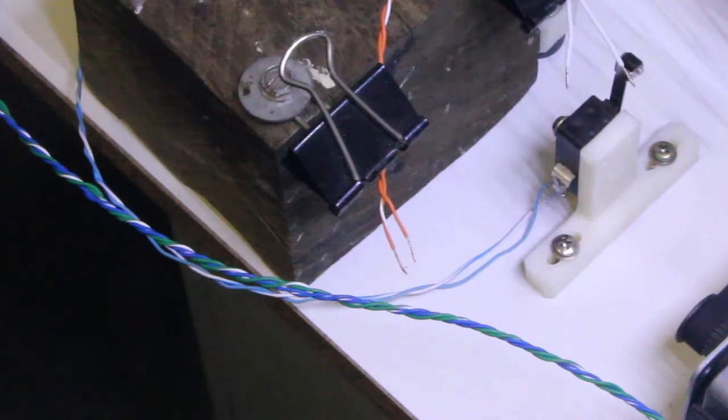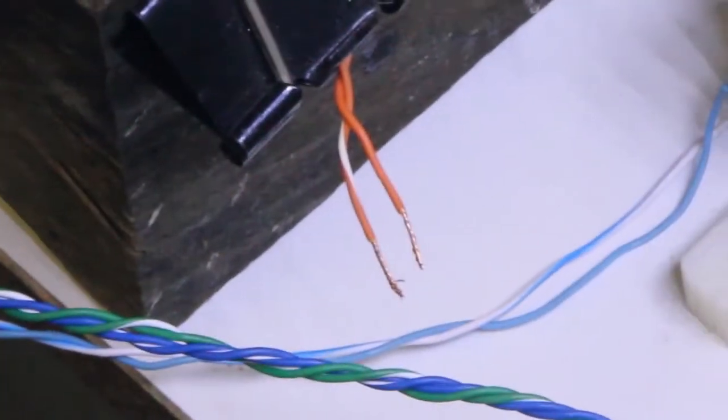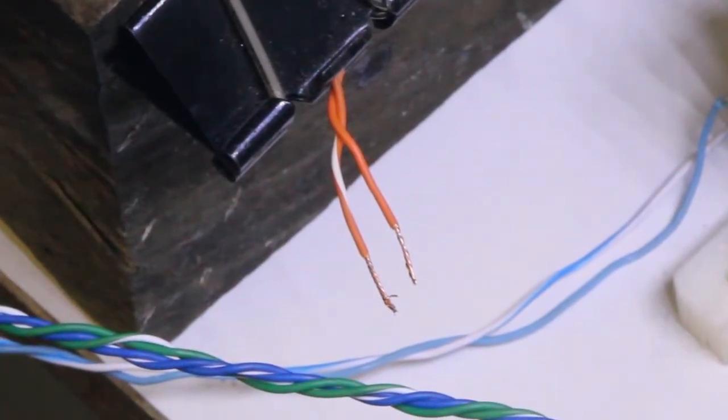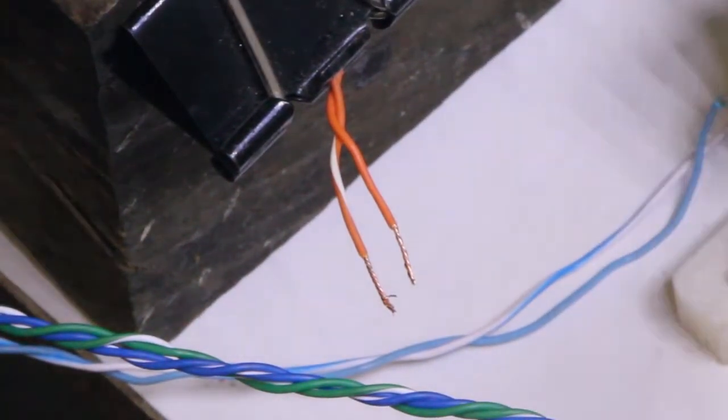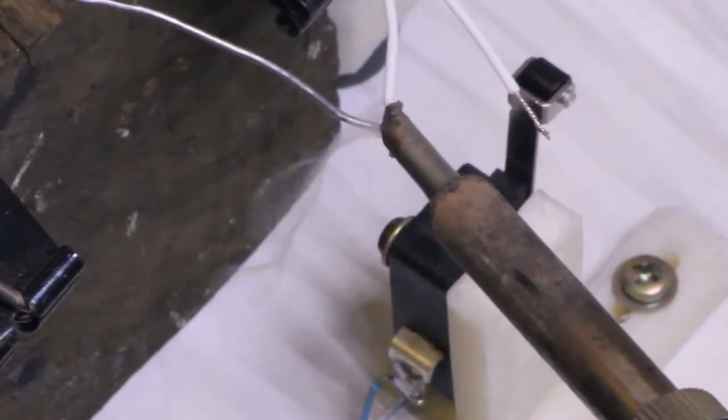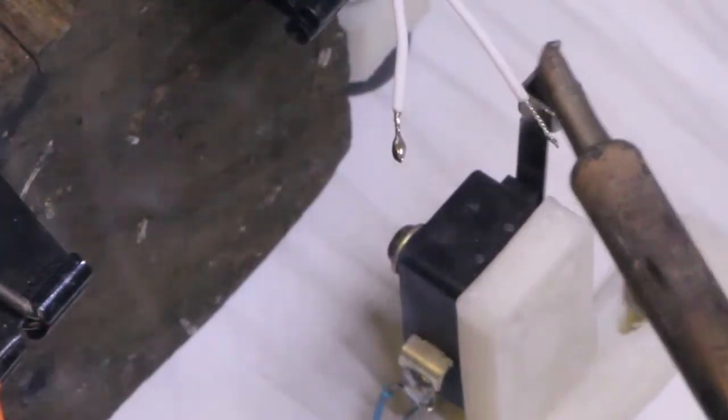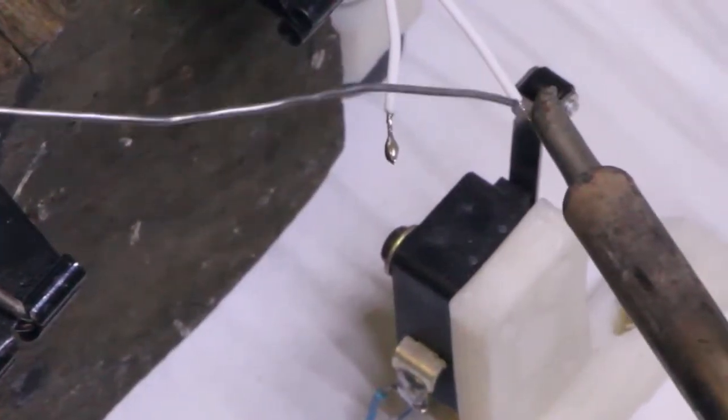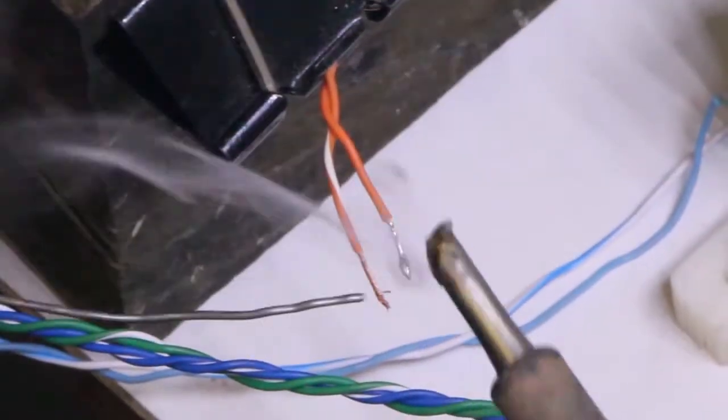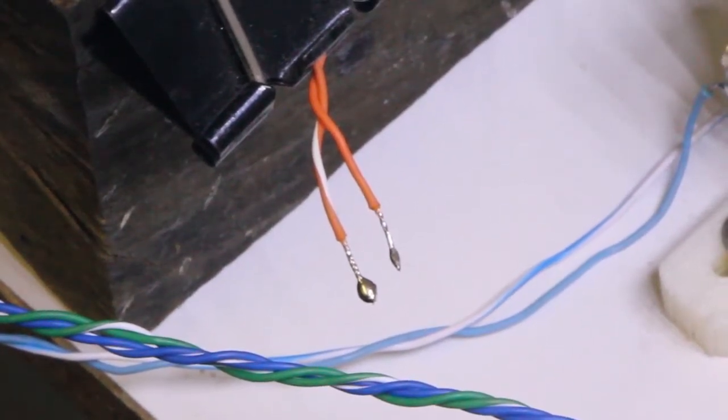And we're going to tin both sets of wires. And we're going to try and leave a reasonable amount of solder on the wire. That'll form the join. Clean your tip in between joints, or in between tinning.